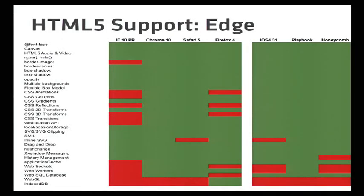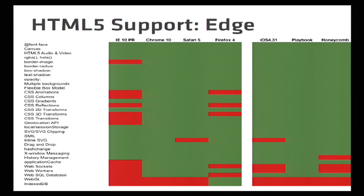This is the support for edge browsers — I compared the desktop side. IE10 preview releases the Edge browser. On mobile: iOS 4.3.1, Playbook, Honeycomb. Playbook actually has the best HTML5 support of anyone except Chrome 10. They've done a really nice job taking a very recent WebKit build and adding enhancements to make it great, and it performs fantastically. Honeycomb is pretty much green all over as well.